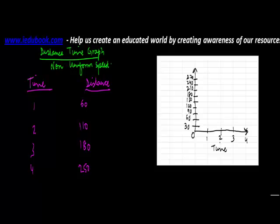Let us start plotting the points. At 1 hour, it was at 60 kilometers. 60 kilometers is here. 1 hour is here. So you draw a line parallel from here. This is point number 1.